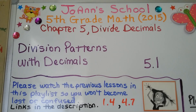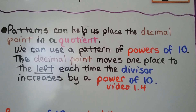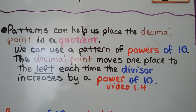This entire chapter, chapter 5, is about dividing decimals. We're at 5.1, division patterns with decimals. Patterns can help us place the decimal point in a quotient. We can use a pattern of powers of 10. The decimal point moves one place to the left each time the divisor increases by a power of 10.